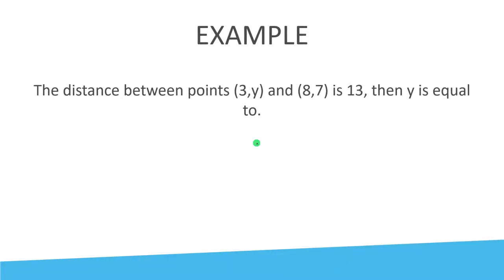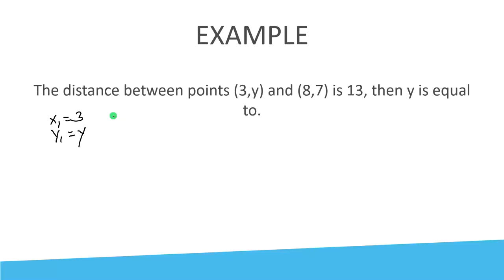Next example: the distance between points (3, y) and (8, 7) is 13. We need to find y. Given: x1 = 3, y1 = y, x2 = 8, y2 = 7, and the distance equals 13.